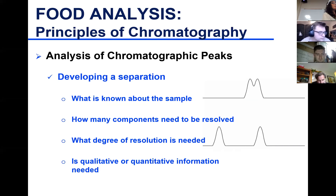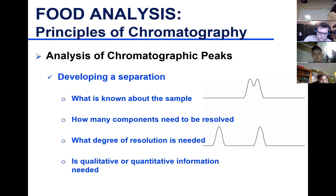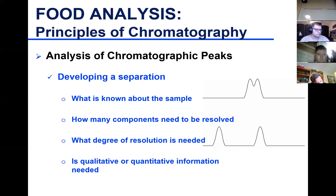Sometimes no matter what we do we don't get separation, so we go for a more powerful technique of identification — mass spectrometry, which Gary will talk about next. Alternatively, we can do 2D or 3D chromatography: for example, first separate by size exclusion and then run on a reverse phase column for another dimension of separation.